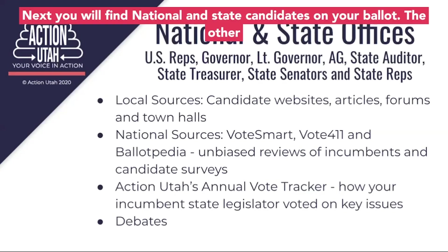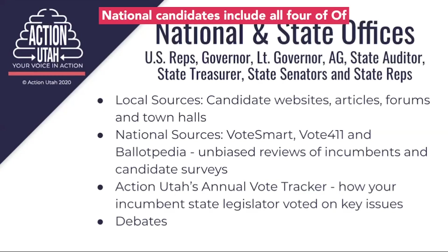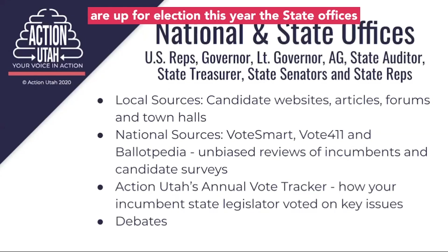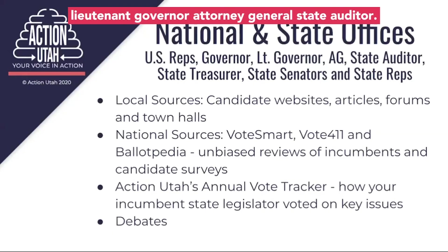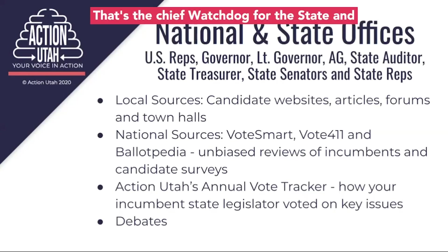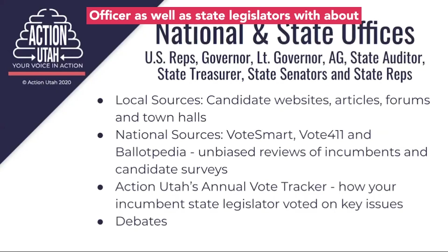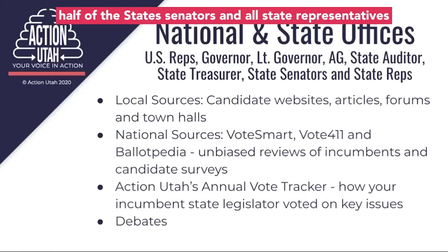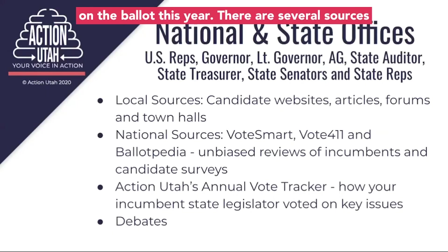Next, you will find national and state candidates on your ballot. The other national candidates include all four of Utah's U.S. Congress people. No U.S. senators are up for election this year. The state offices up for election include the Utah governor and lieutenant governor, attorney general, state auditor — that's the chief watchdog for the state — and state treasurer, the state's chief financial officer, as well as state legislators, with about half of the state's senators and all state representatives on the ballot this year.